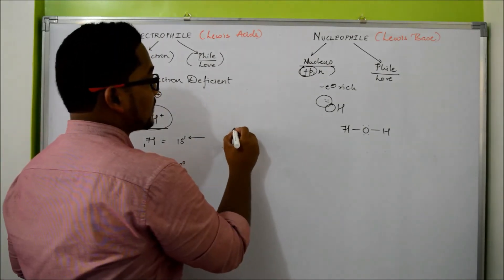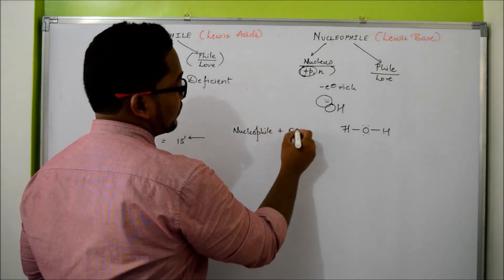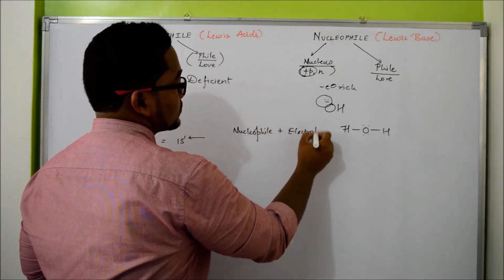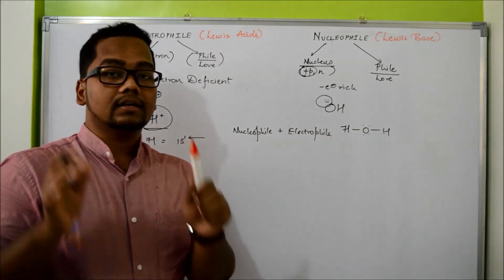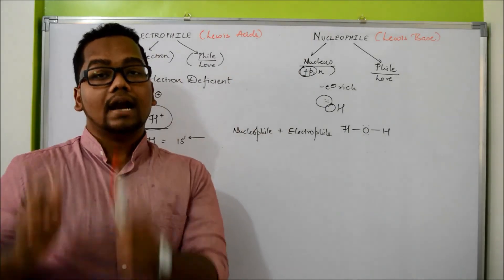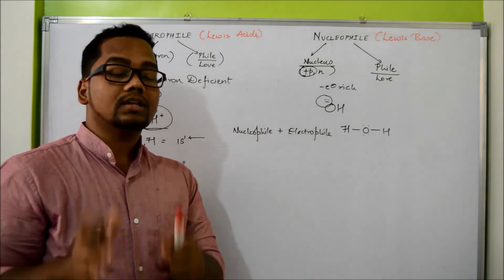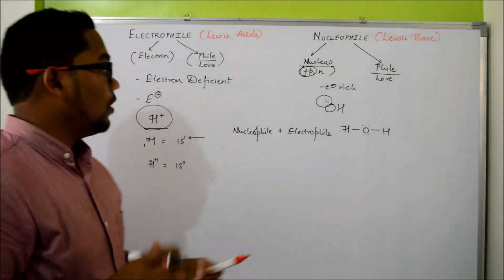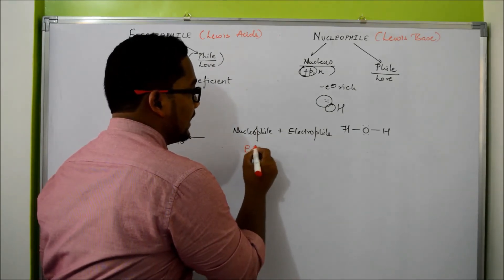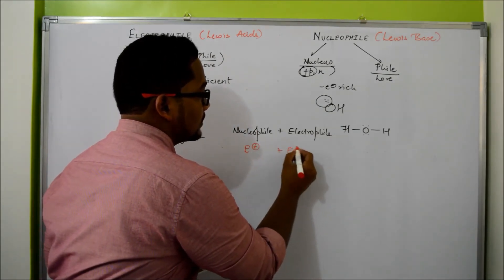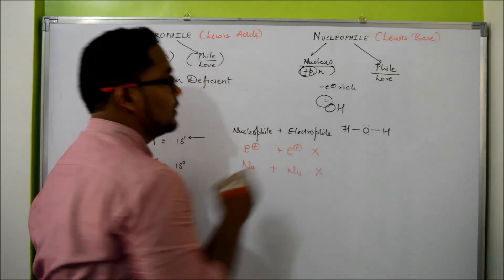A very important thing to understand is that every organic reaction will fall into this class — you are always going to have a Nucleophile plus Electrophile reaction. In organic chemistry, all reactions are going to be a reaction between a Nucleophile and an Electrophile, meaning a reaction between an electron-rich molecule and an electron-deficient molecule, ion, or atom. Electrophile reacting with Electrophile is not possible, and you cannot have a Nucleophile reacting with a Nucleophile either.